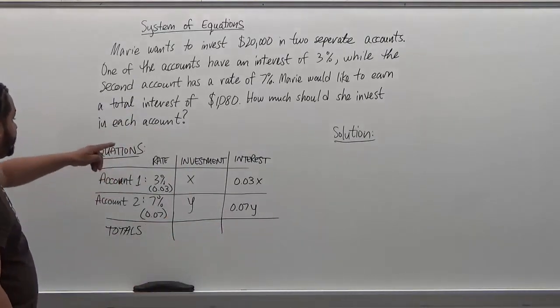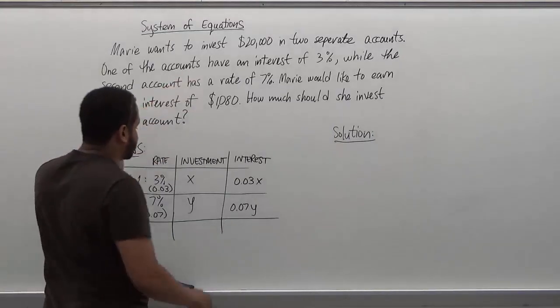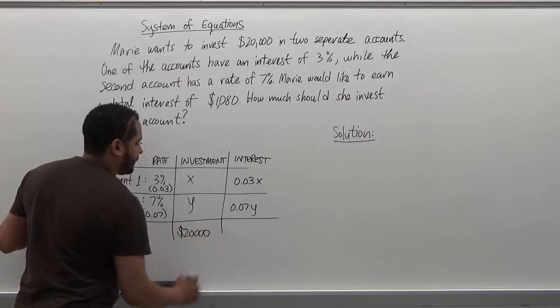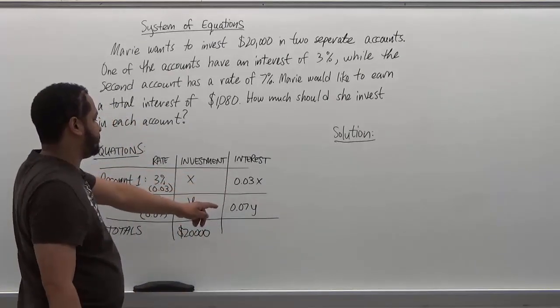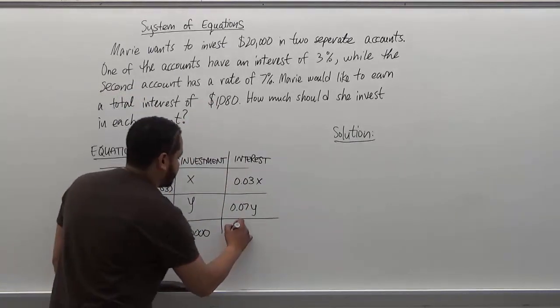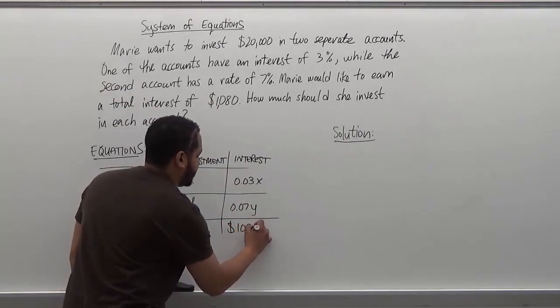So we know that the investment is $20,000. So the x plus y should give us $20,000. Then the 0.03x plus the 0.07y should give us the interest rate, which is supposed to be $1,080.